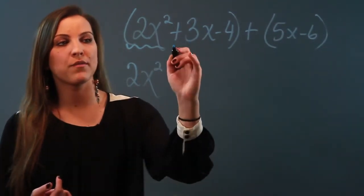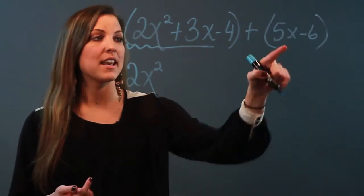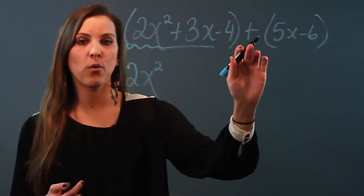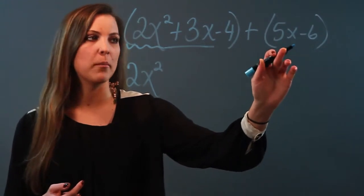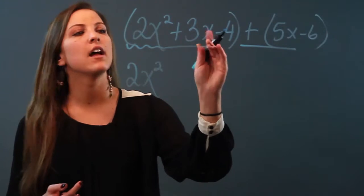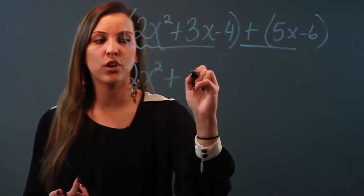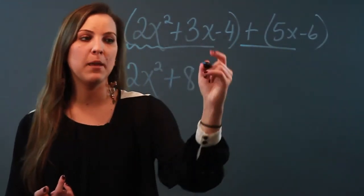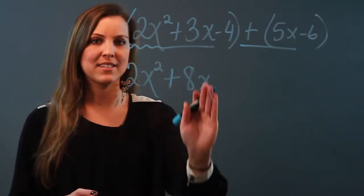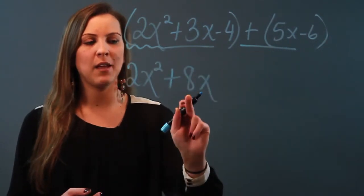Now for like terms of 3x, I'm looking for any other x, and I see a 5x over here. It's very important to look at the sign before the term. So because this is positive, it's a plus 5x and that's plus 3x. I'm doing 3 plus 5, which is 8. So you combine their coefficients and you keep their variable as it is — it stays x. So 3x plus 5x became 8x.